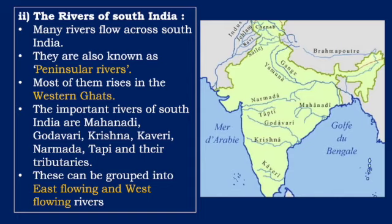Rivers of South India. The rivers of South India include Mahanadi, Godavari, Krishna, Kaveri, Narmada, Tapi and their tributaries. The rivers of South India can be grouped into east flowing and west flowing rivers. Some rivers flow towards the east, whereas some others flow towards the west.